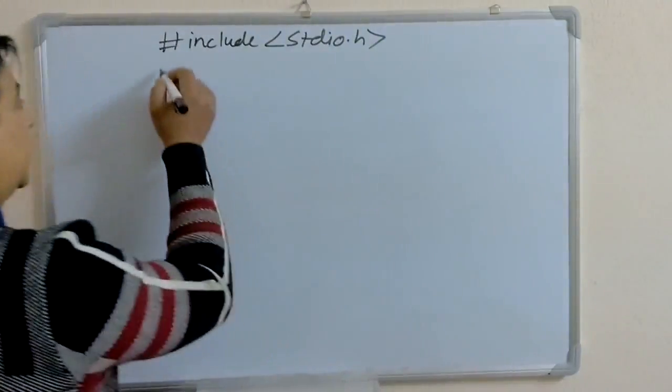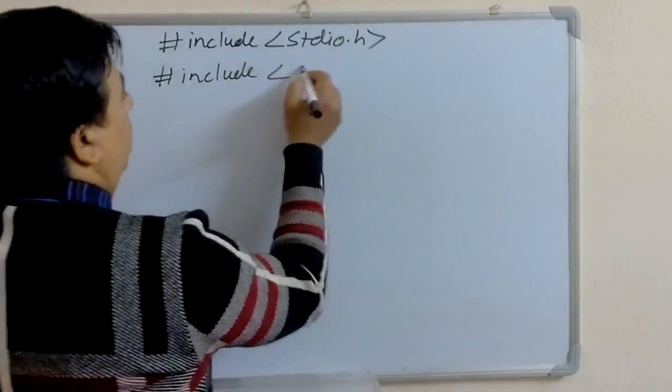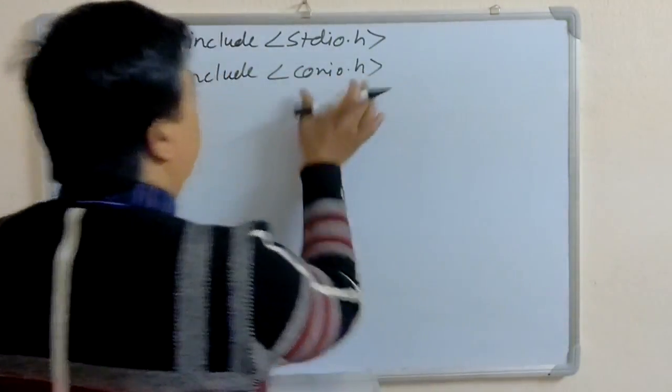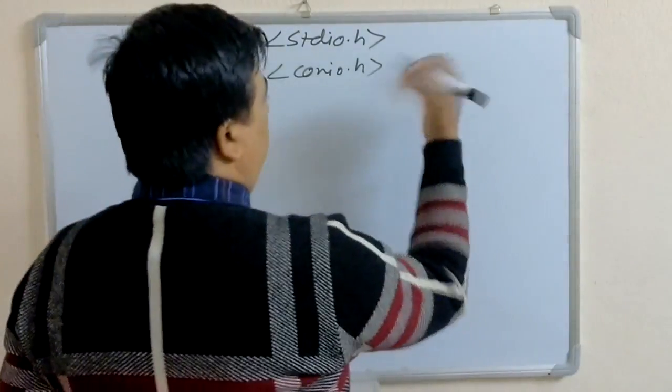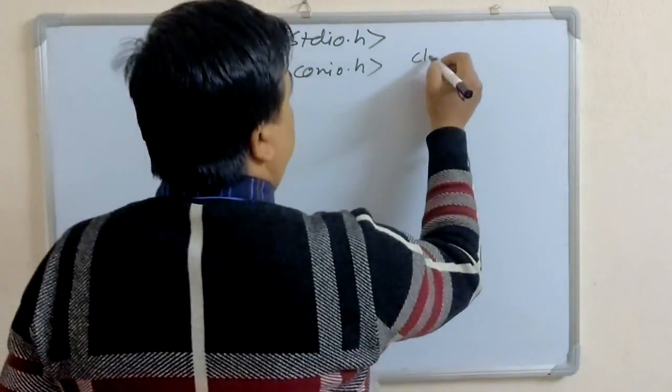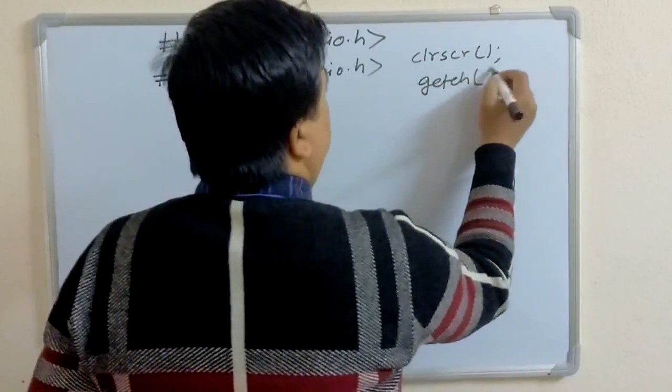The next header file is has include conio.h. This conio.h is used to use the function clrscr function or getch function.